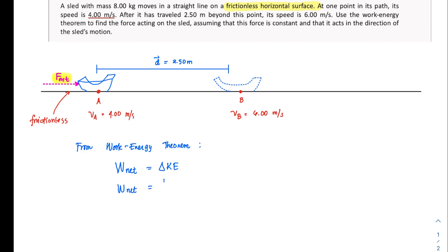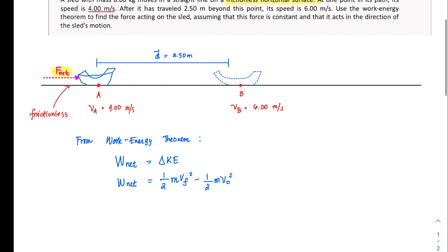So we just have to use that theorem and expand from this one. So work net is equal to one half, just going to expand kinetic energy equation. This is the final velocity since we are getting the change in the kinetic energy, one half m v naught or v initial squared. So this is just the expansion of the kinetic energy.